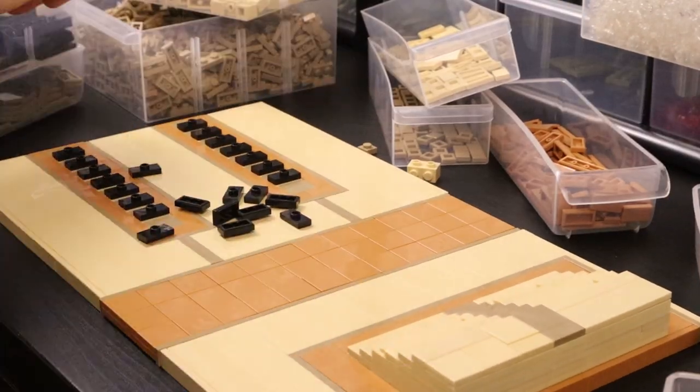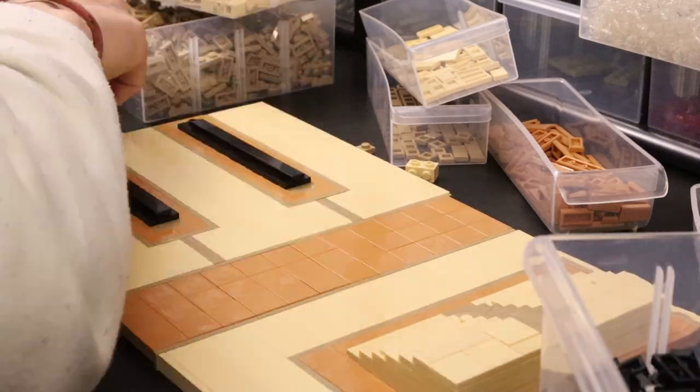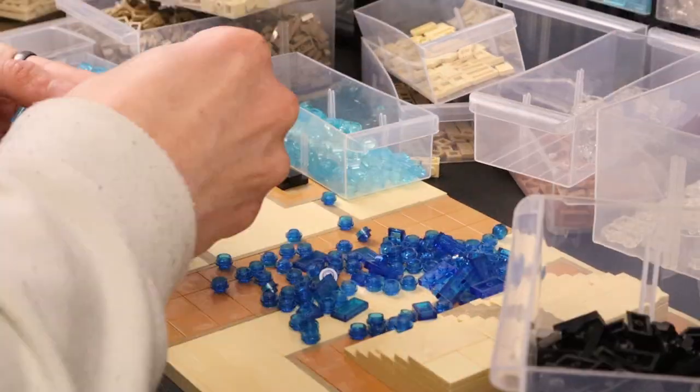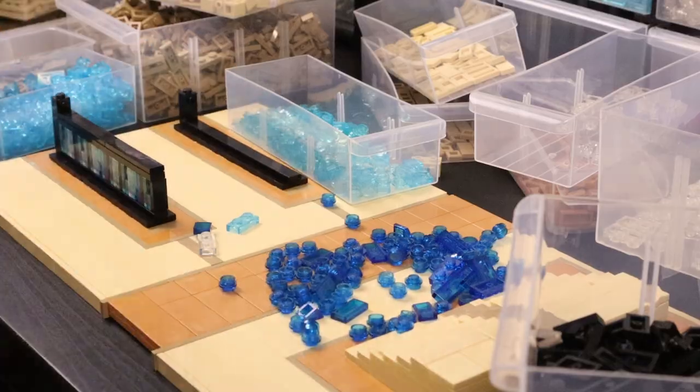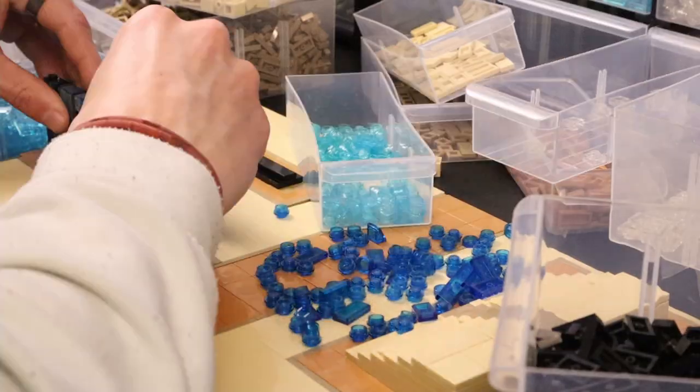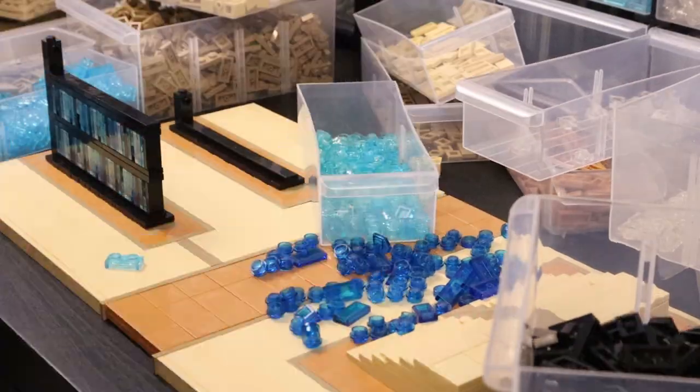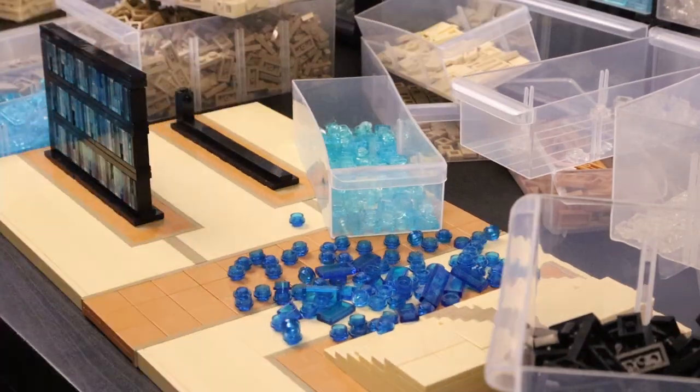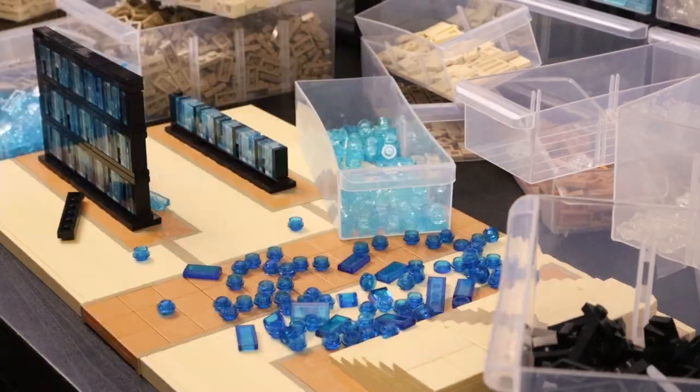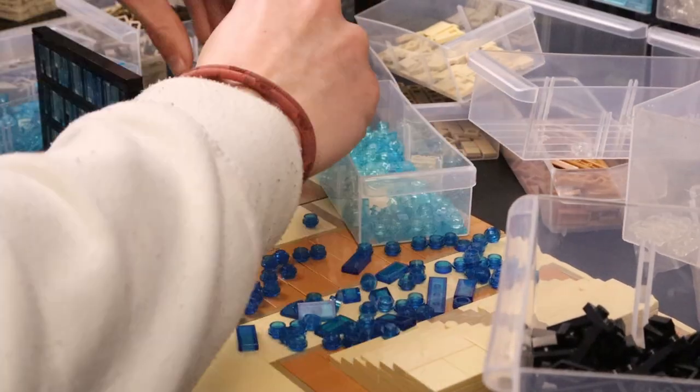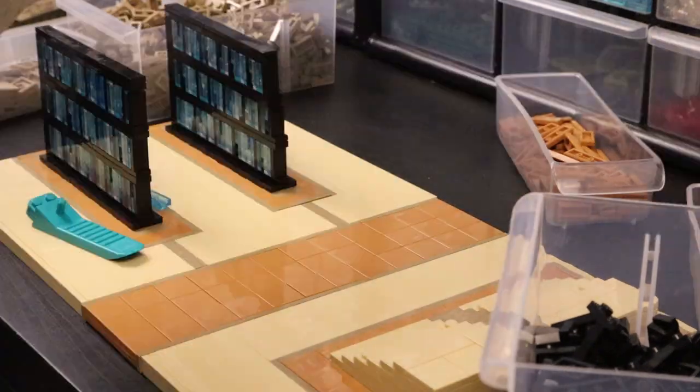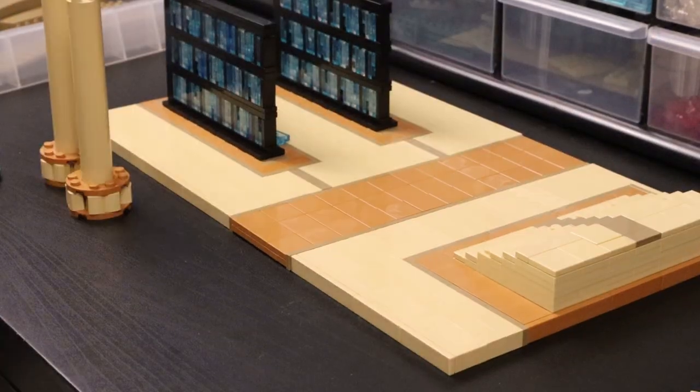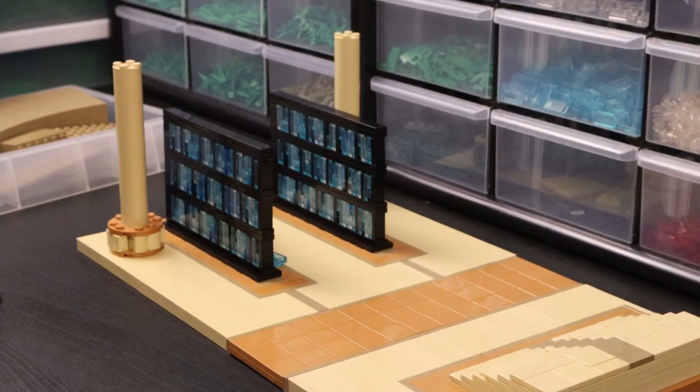And then I started working on the bookshelves, which is a bunch of jumper plates and then tiles on top of it. And using SNOT bricks, I'm attaching various different colors of translucent pieces, blue and clear, and then having some dividers with the black plates to kind of break up the books and get that Jedi temple library look. And I went ahead and made another one to capture the look of the library in the temple.